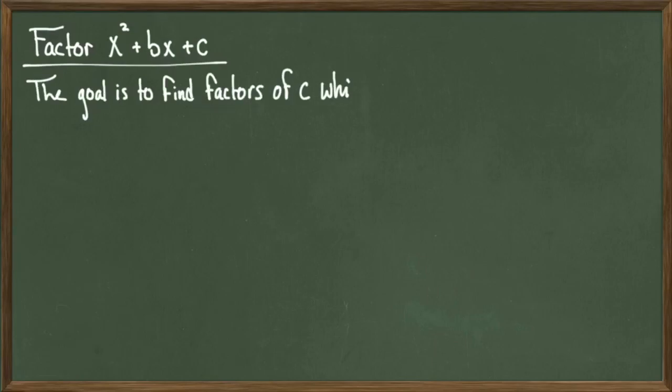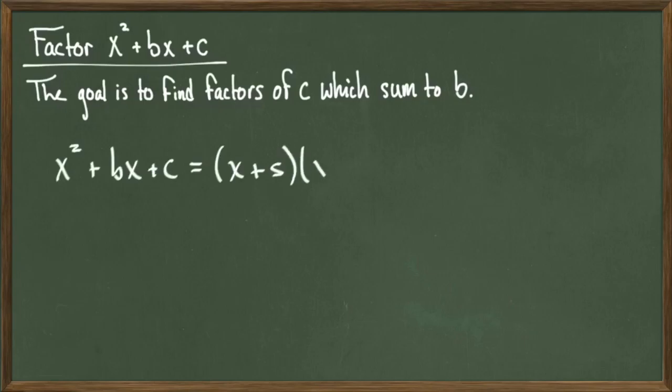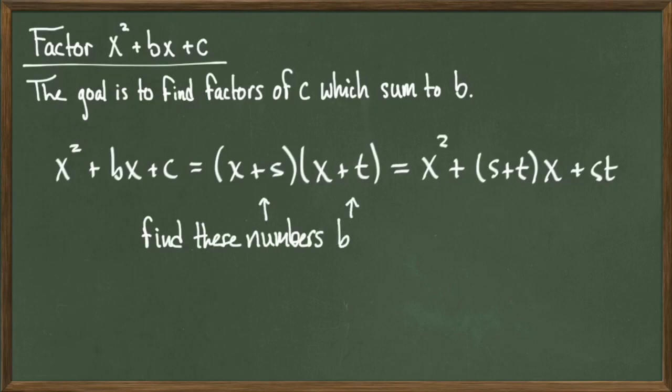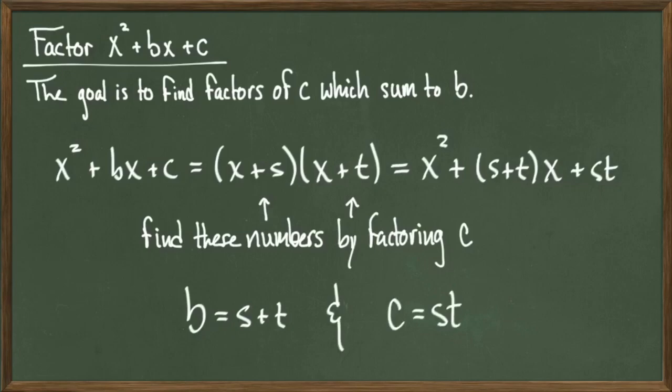Now we'll talk about how to factor degree 2 polynomials whose leading coefficient is 1. The goal of this process is to find factors of the number c such that when you add these factors together, you get b in return. If such factors exist, then we'll be able to write x squared plus bx plus c as x plus s times x plus t, where s and t are these numbers that we have to find. When we find s and t, they need to have the property that b is equal to s plus t and c is equal to s times t.